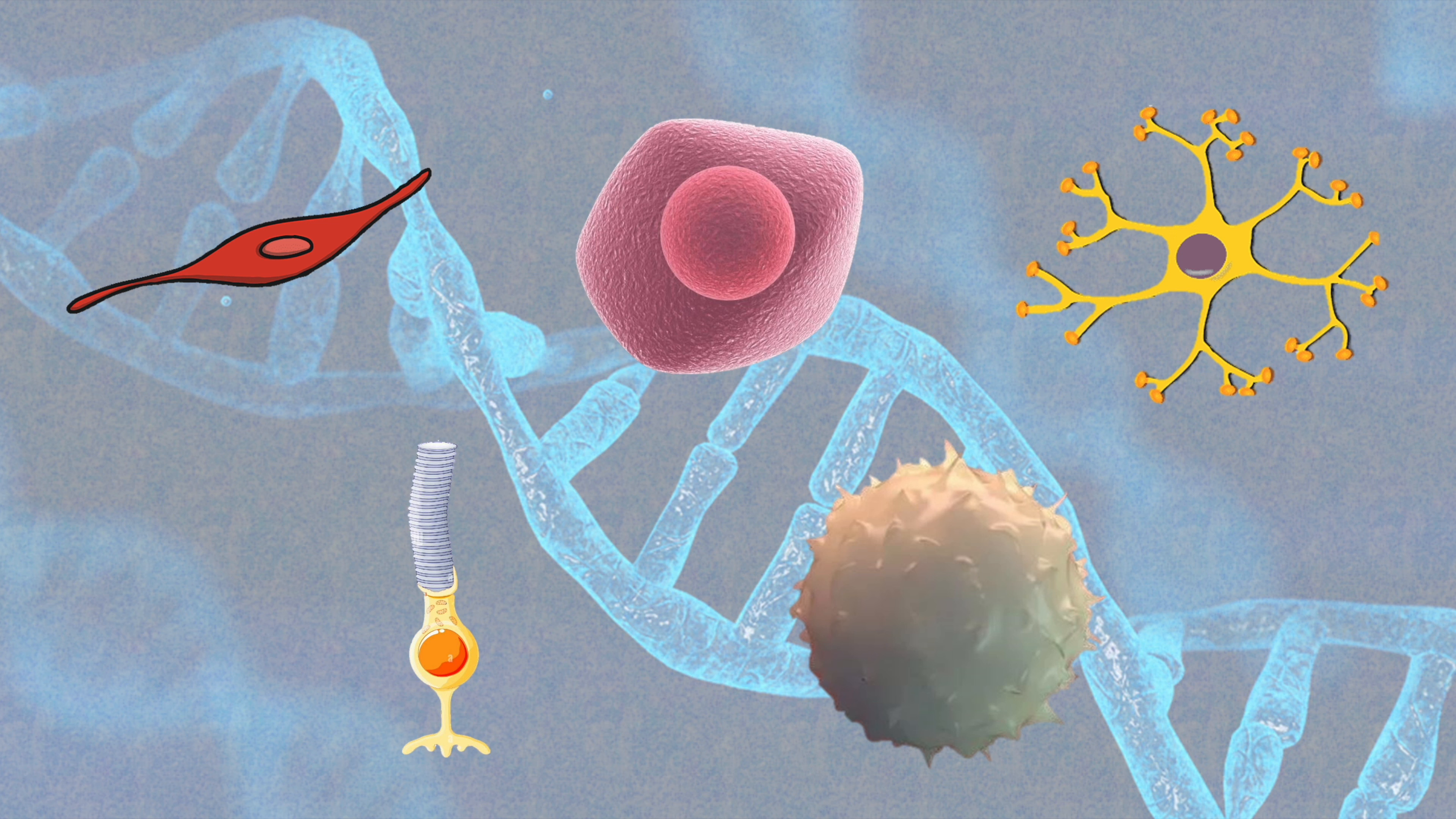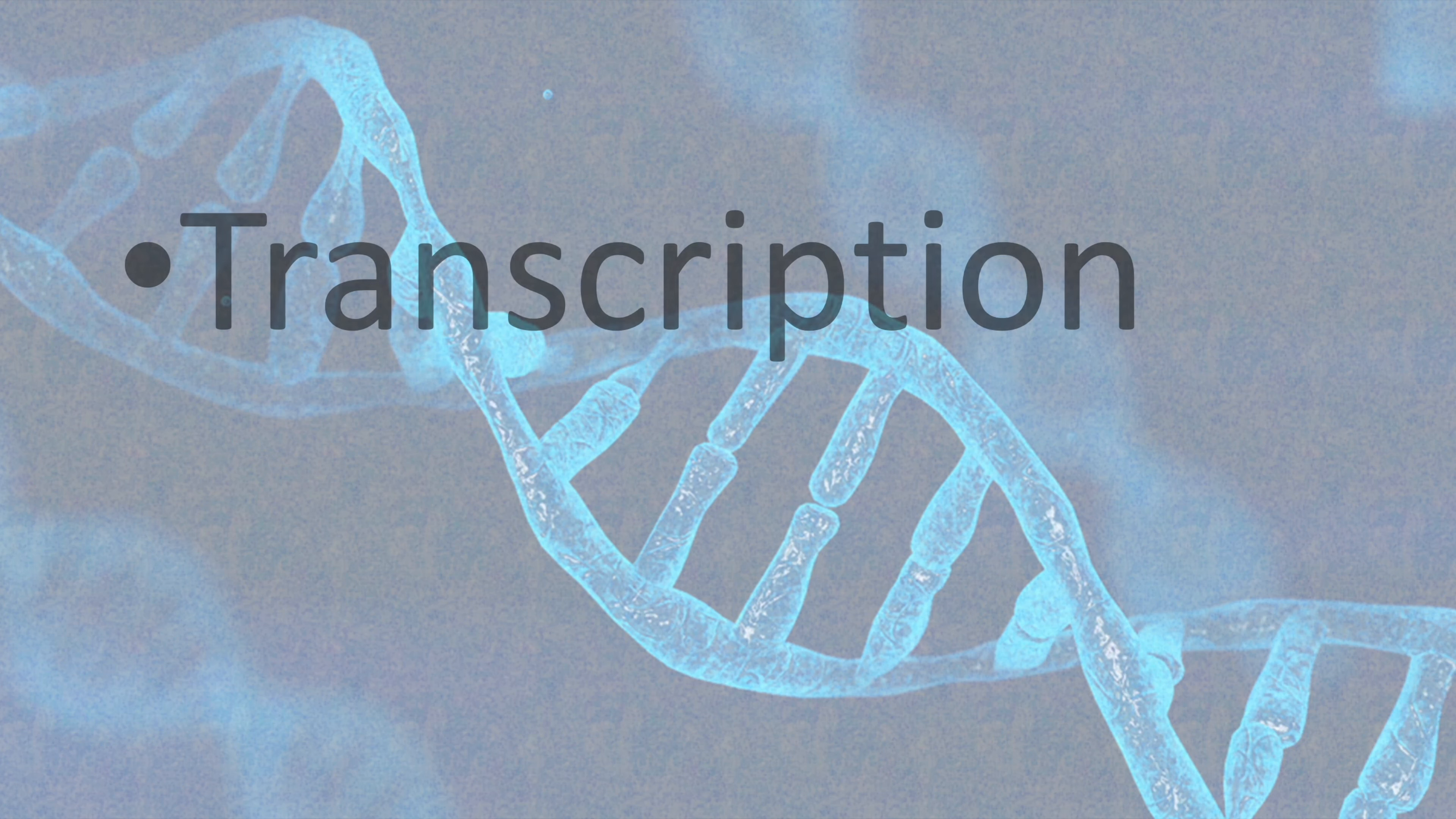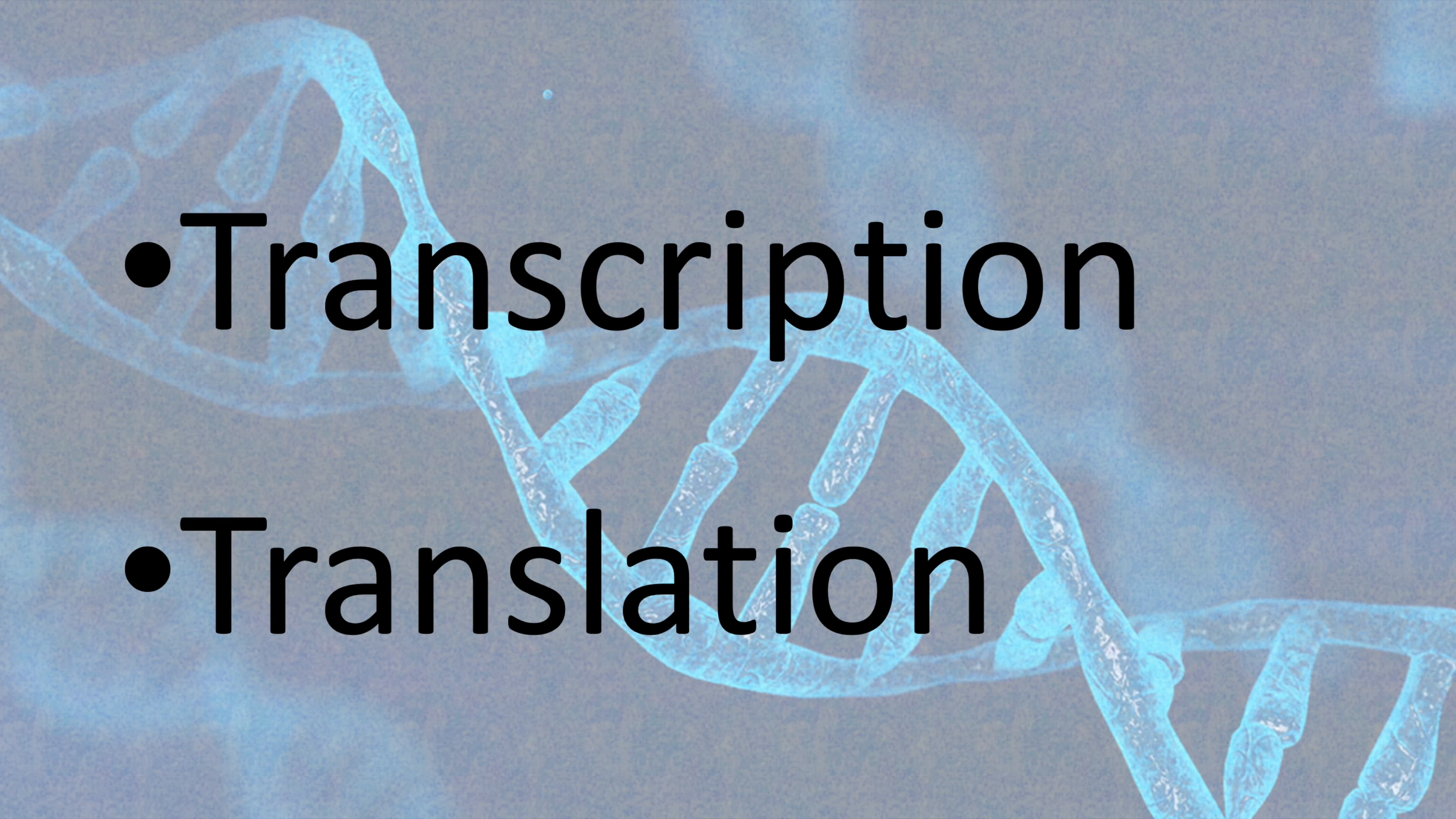And depending on which part of the DNA is read, different proteins are synthesized, so different functions are carried out. That's why different types of cells exist. Proteins are synthesized in two steps: transcription and translation.